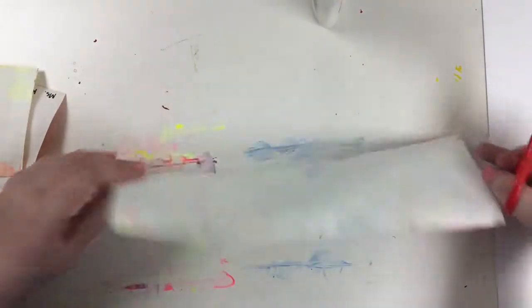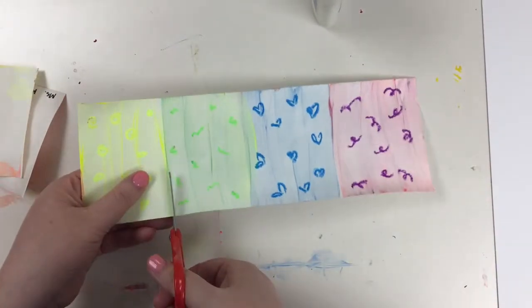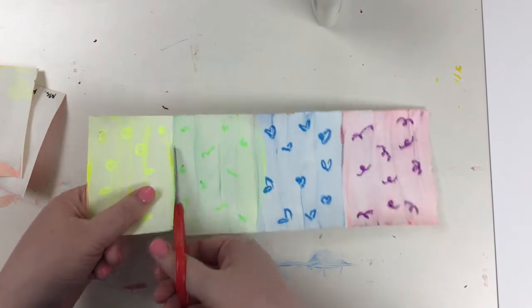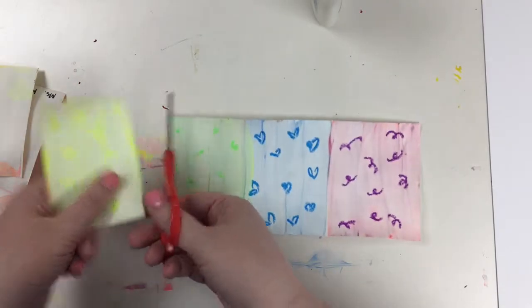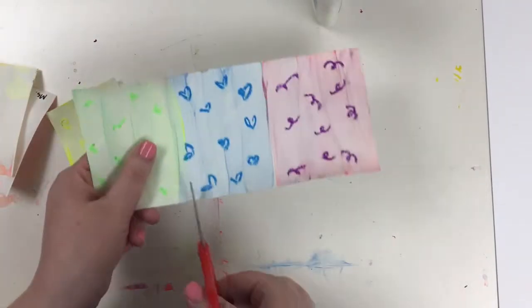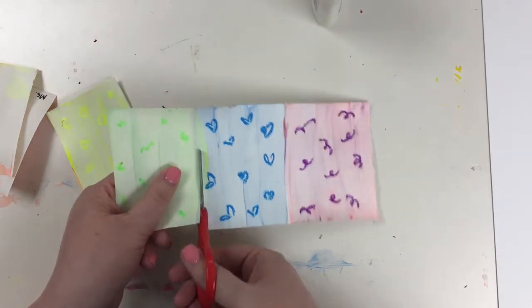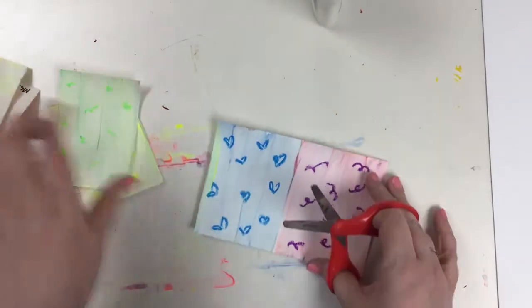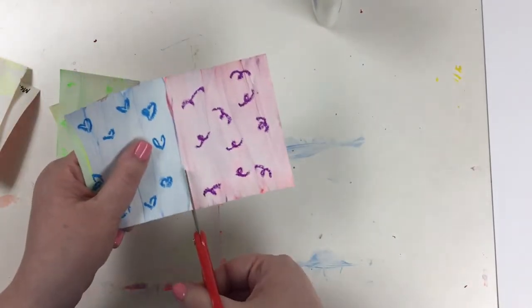Or if it's easier to see the colors, just cut at the edge of like yellow and green, and then move over and cut where it turns blue, so that we have six different rectangles.